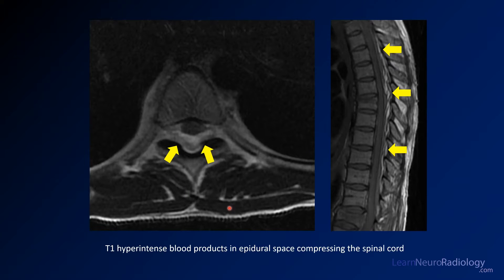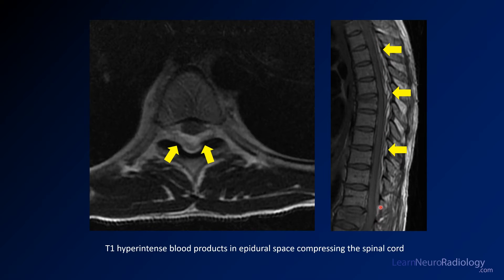On these T1 weighted images through the spinal canal, you can see there's something filling the dorsal epidural space. The canal is displaced ventrally. There's T1 hyperintense material filling the dorsal epidural space, as indicated by the arrows on the previous image. It is T1 hyperintense and very heterogeneous.